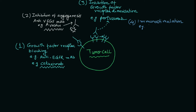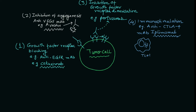The fourth mechanism is immunostimulation. Via immunostimulation it can also target the tumor cell. The example is an anti-CTLA4 monoclonal antibody — written as mAb — and the specific example is ipilimumab. This antibody binds to the CTLA4 receptor and targets the T cell.